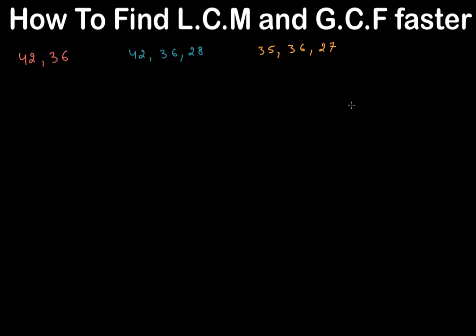Hello guys, in today's video we are going to find LCM — the least common multiple — and GCF — the greatest common factor — faster. There are a lot of different ways to find them, but the method I learned during my school years I think is faster than any of those, because I tried all of them.